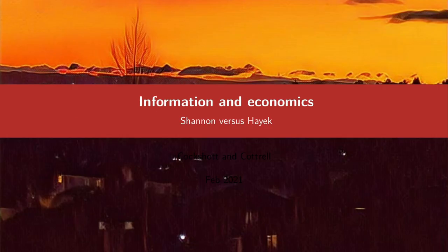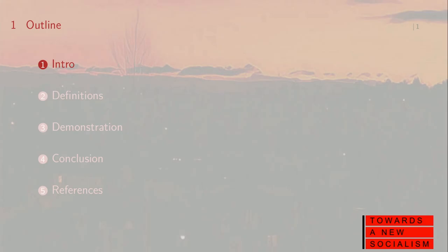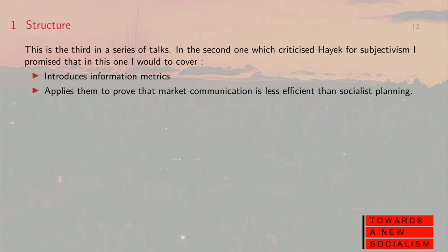This is the third video in the sequence about information and economics, or as a critique of the Hayekian school. The whole thing is based on an article that Alan and I wrote in the 90s. I covered the philosophical objections to Hayek earlier. Now I'm going to get onto the mathematical argument about why he's wrong. I'm going to introduce information metrics and apply them to prove that market communication is either less efficient than or no more efficient than socialist planning, contrary to the claims of Hayek.